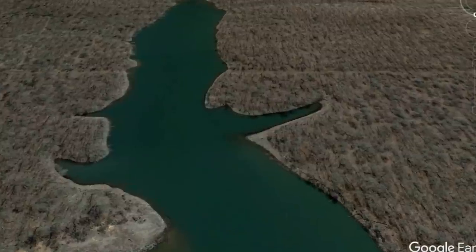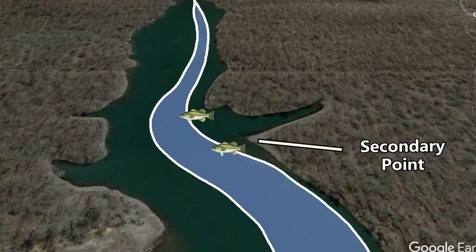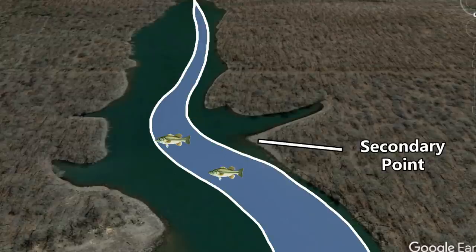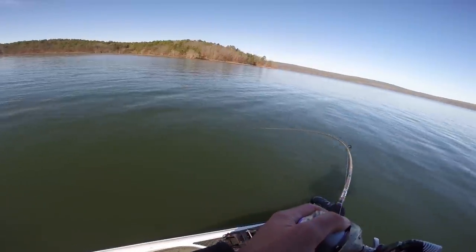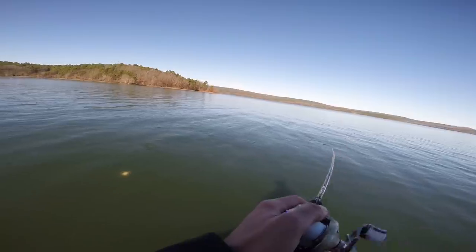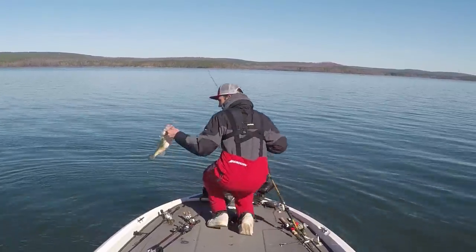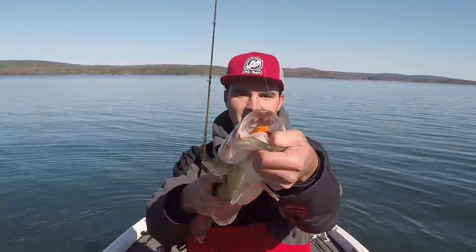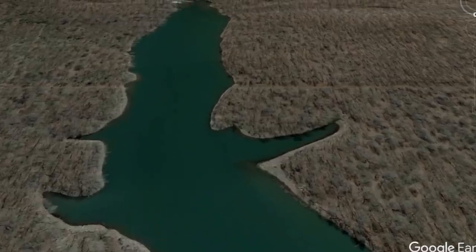Moving into pre-spawn in February and March, fish are going to follow these creek channels out from the main lake back into the creeks and set up on secondary points where the creek channel runs really close. These fish like to pull up on shallow points and feed when the weather is nice, but during a cold front they'll pull off back into the creek channel and suspend. I normally target these secondary points with a jerkbait, crankbait, or Carolina rig — a medium diving crankbait worked really slow across those points produces a lot of big pre-spawn bass.